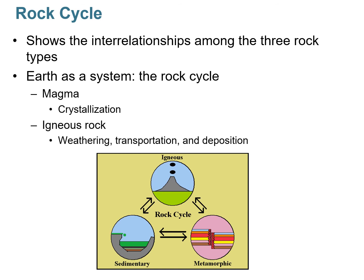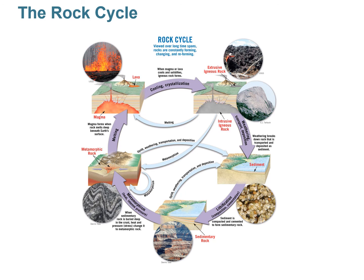You start off typically with magma. Magma slowly crystallizes and becomes an igneous rock. Igneous rocks are often found on the surface of the Earth, or they're exposed at the surface through erosion and uplift. And when they're on the surface, they can weather into smaller sediments, be transported, and deposited in different environments. So we'll start there with magma — it crystallizes, cools down, and becomes an igneous rock.